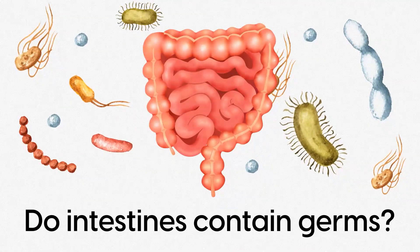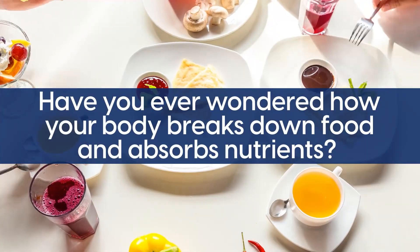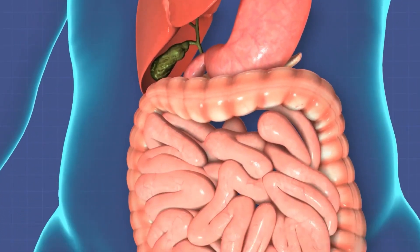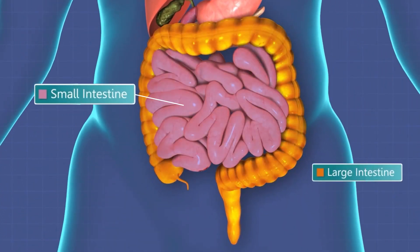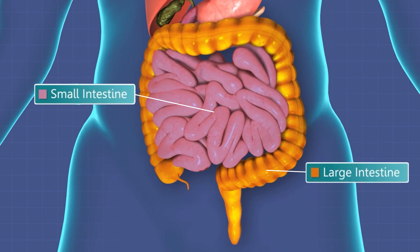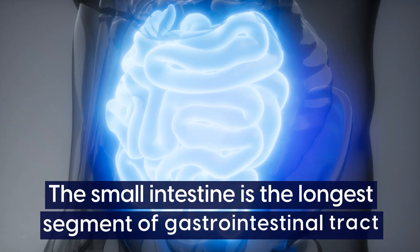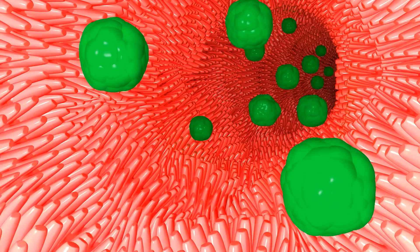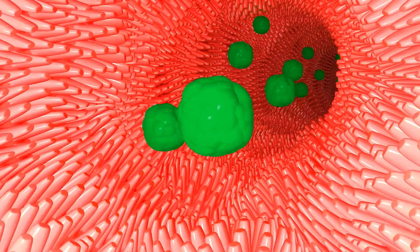Do intestines contain germs? Have you ever wondered how your body breaks down food and absorbs nutrients? The intestines are one of the major organs that decide how high your blood glucose will be and how insulin-resistant you'll be. There are two intestines: the small intestine and the large intestine. The small intestine is the longest segment of our gastrointestinal tract, where food is broken down into liquid and most of its nutrients are absorbed.